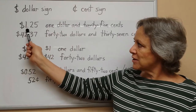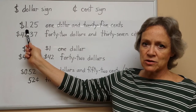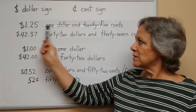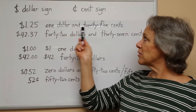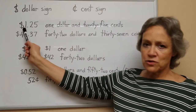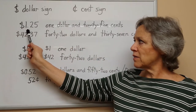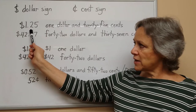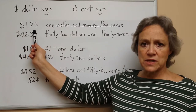So this here is one dollar and twenty-five cents, and this is how you would read it: one dollar and twenty-five cents. We first write the dollar sign, then the number of dollars, then a decimal point, and then the number of cents.